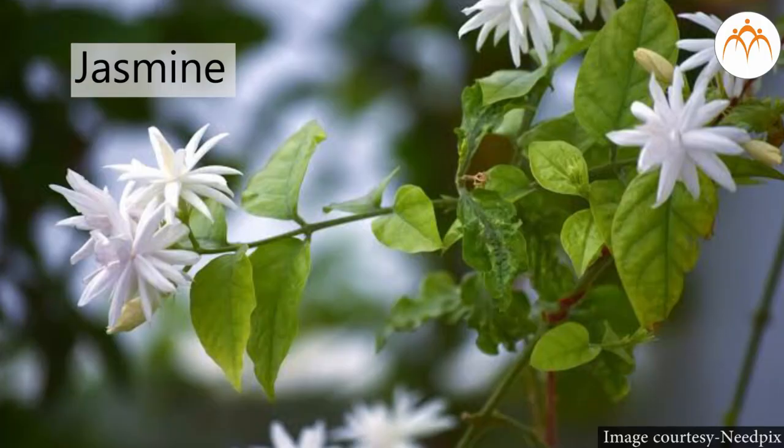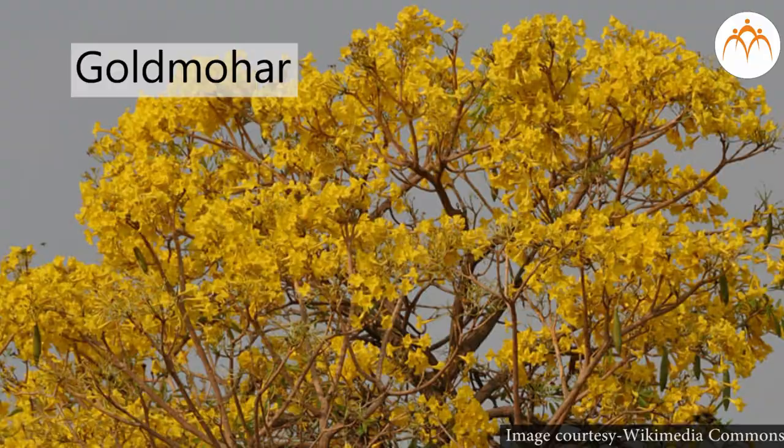Flowers like hibiscus, petunia, lotus are large and produced singly. But if flowers are small in size, then are produced in bunch. Examples: jasmine, tulsi, bottle brush, gold moher, caesalpinia, etc.